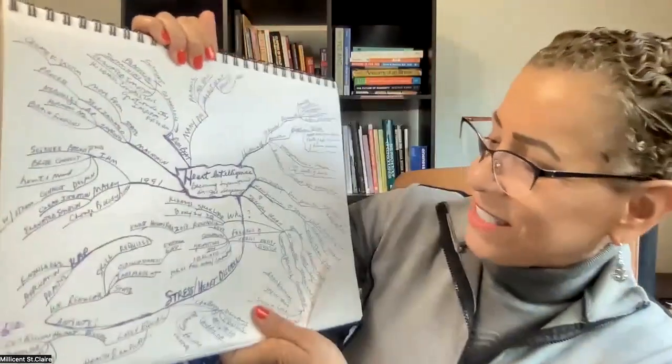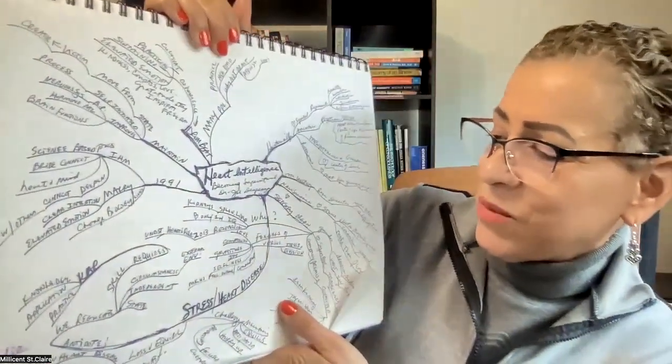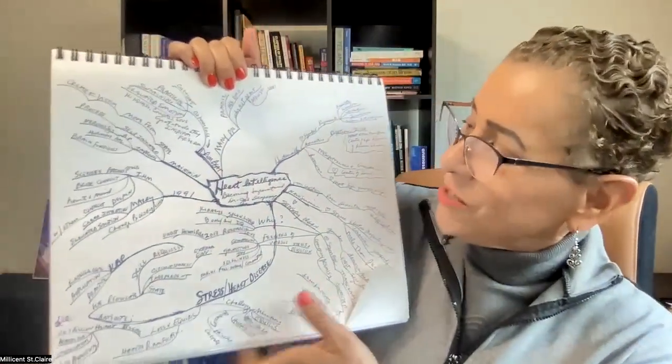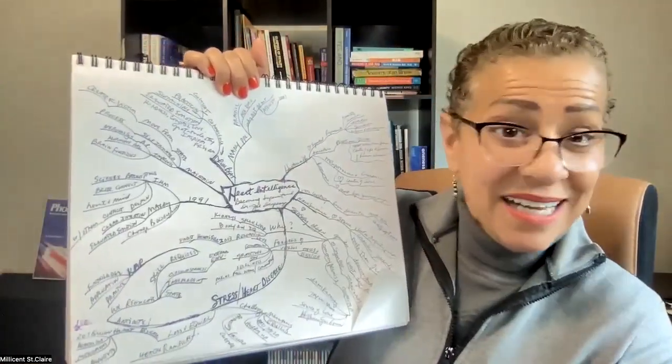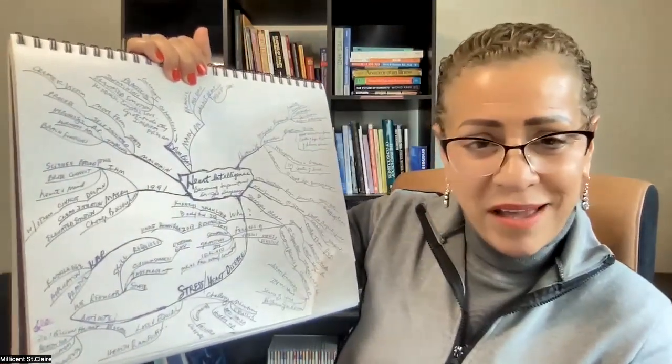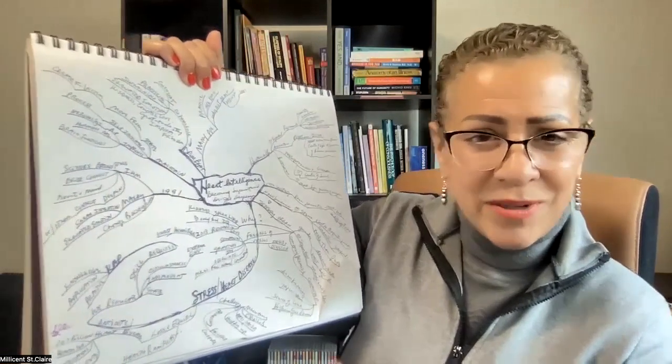Here's another one — this one's called 'Heart Intelligence,' from Dr. Joe Dispenza's book 'Becoming Supernatural.' This was just one chapter and I loved it so much. This guy can talk, but he's got substance. That's just one example, and there are many more inside this collection.